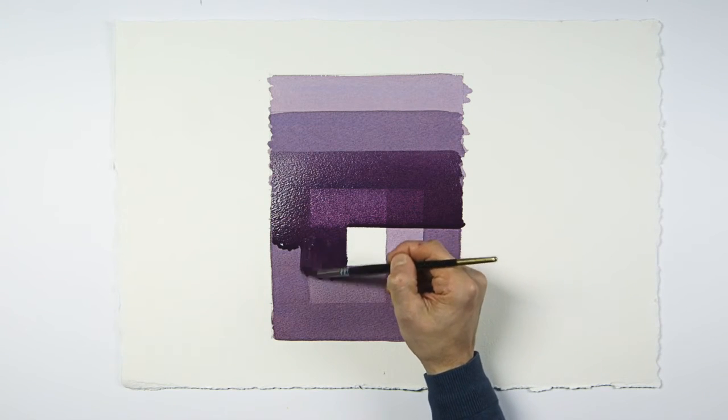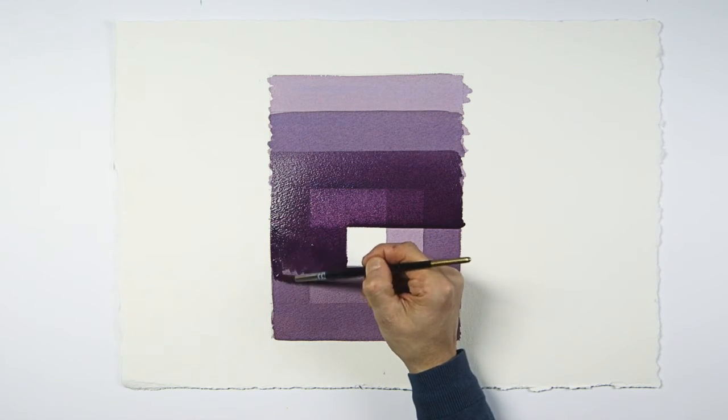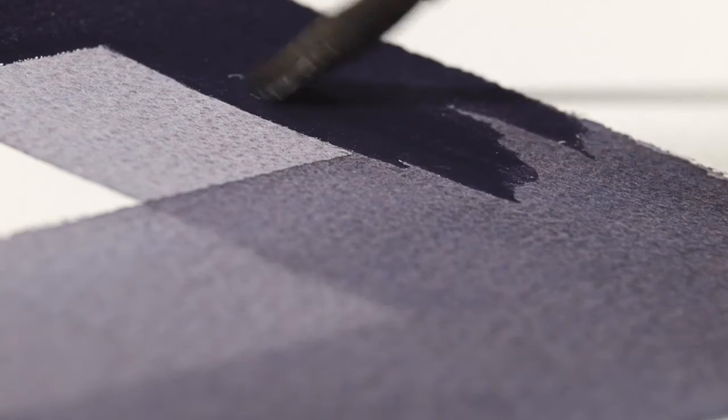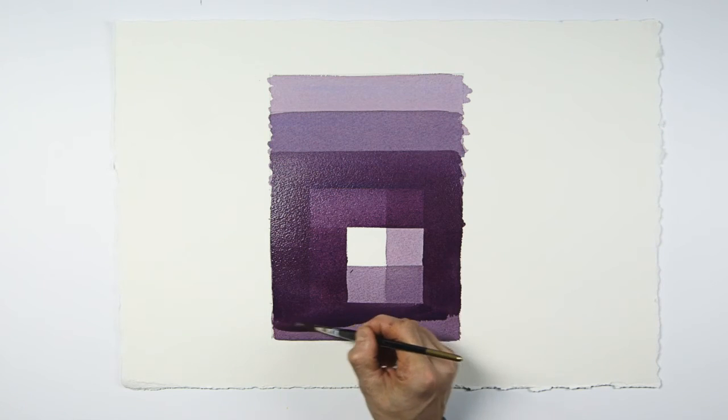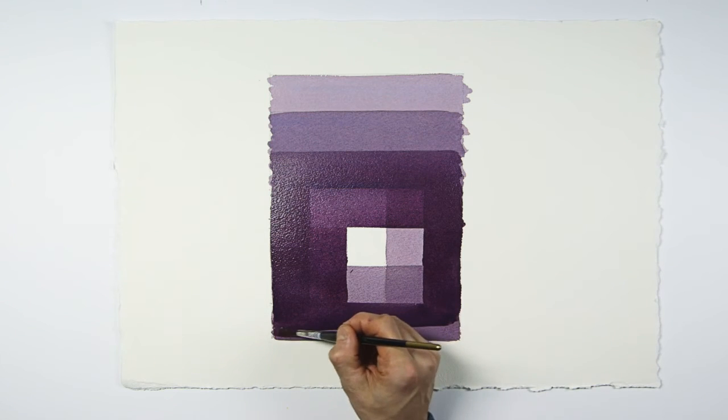I've only used three tones here but it's possible to use more. As we have saturated the paper with paint it can't absorb any more, yet we can still see the luminosity of the paper showing through.